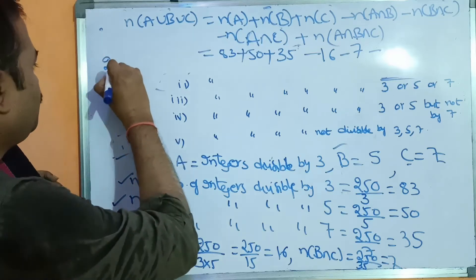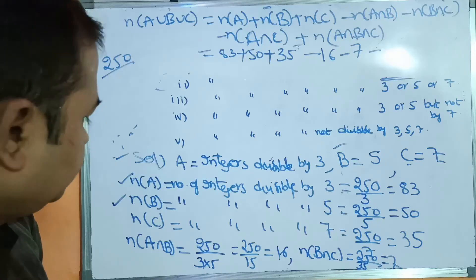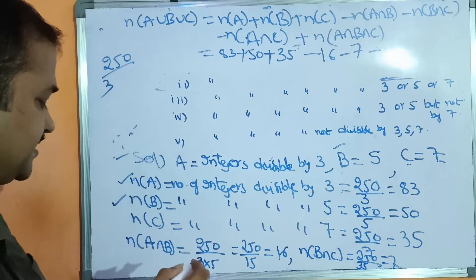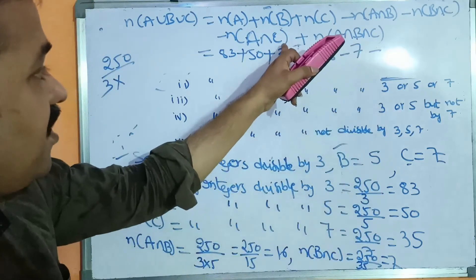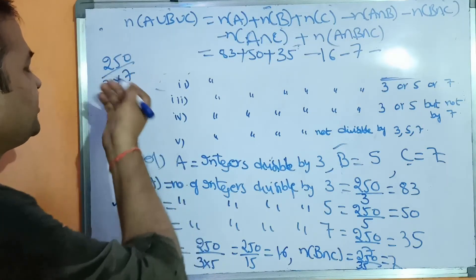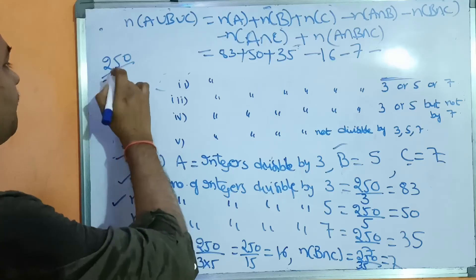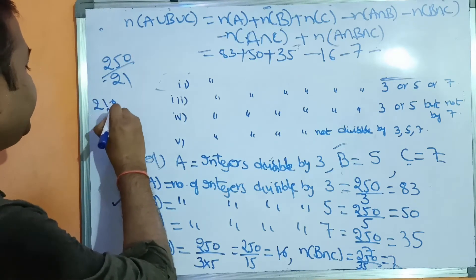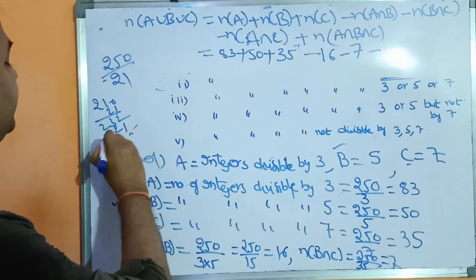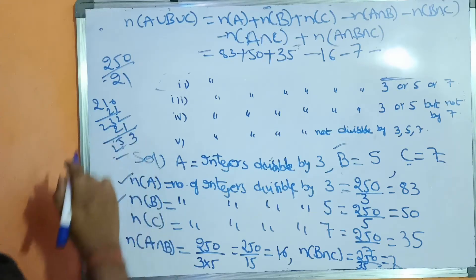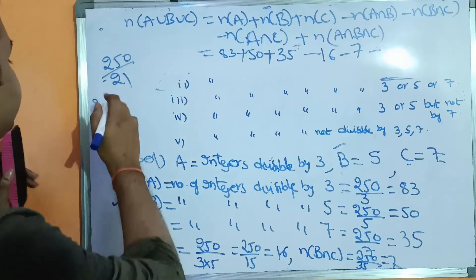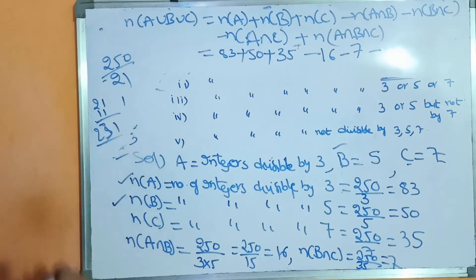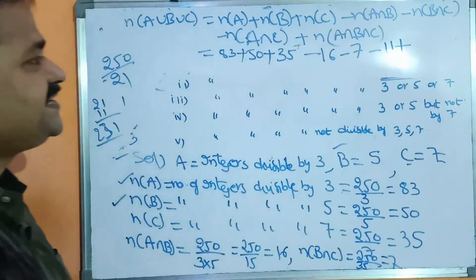Now calculating n(A∩C): A value is 3, C value is 7, so 3×7 = 21. n(A∩C) = floor(250/21) = 11. And n(A∩B∩C) = floor(250/(3×5×7)) = floor(250/105) = 2. So n(A∪B∪C) = 83 + 50 + 35 − 16 − 7 − 11 + 2 = 116.